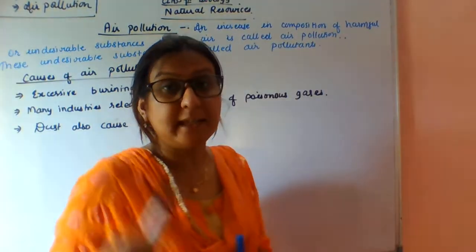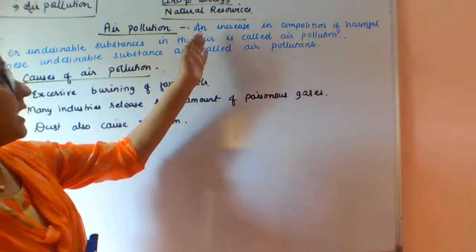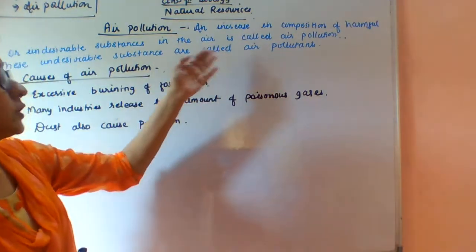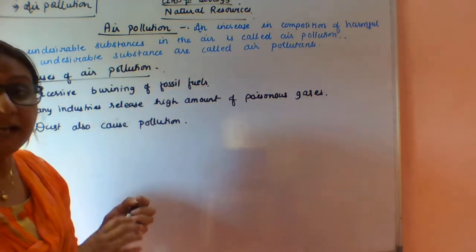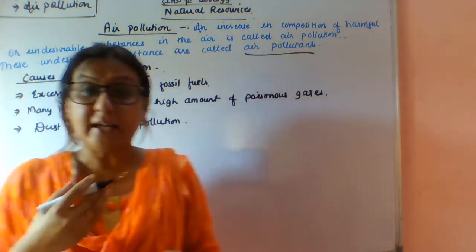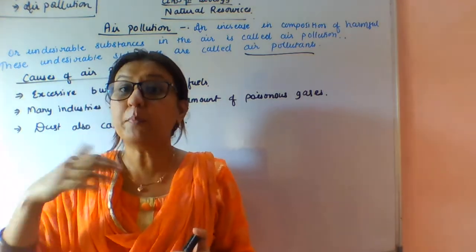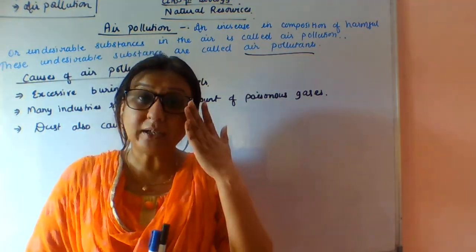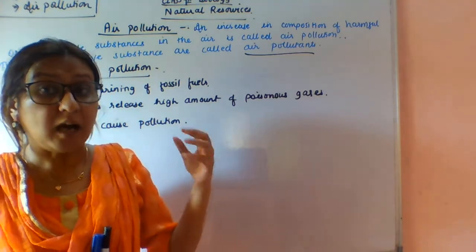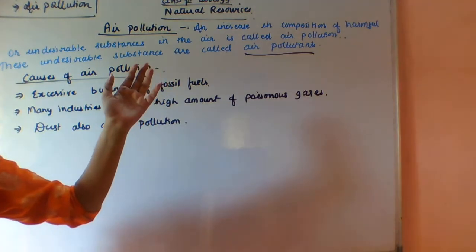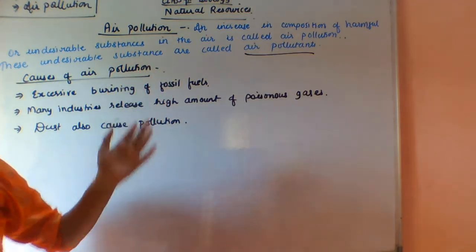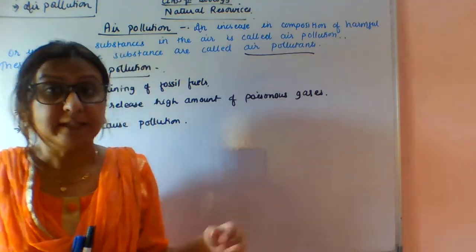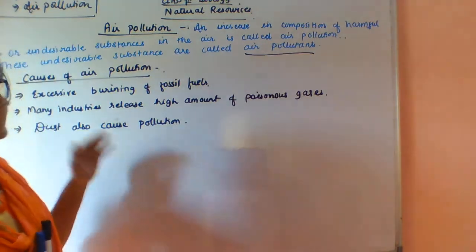Next, students, we will study air pollution. Air pollution is an increase in the composition of harmful or undesirable substances in the air. These undesirable substances are called air pollutants. Air pollution can also be defined as an undesirable alteration in the physical, chemical, and biological characteristics of air.